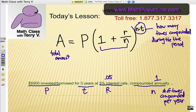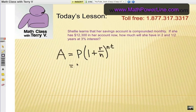Alright, here's another example. Shelly learns that her savings account is compounded monthly. If she has $12,300 in her account right now, how much will she have in two and a half years at a 3% interest rate? So here's the formula. The P principle would be your starting number there. So $12,300 goes on the outside of the parentheses.